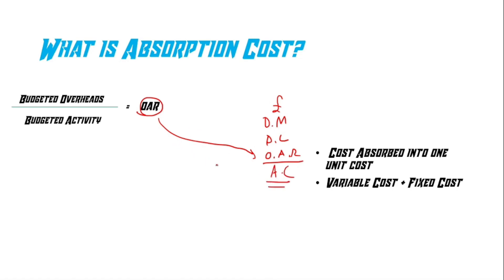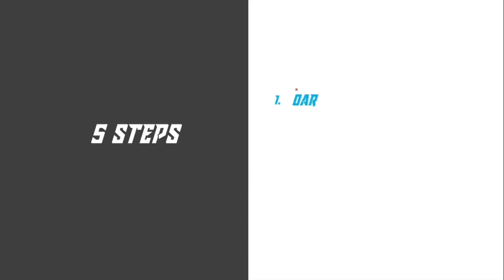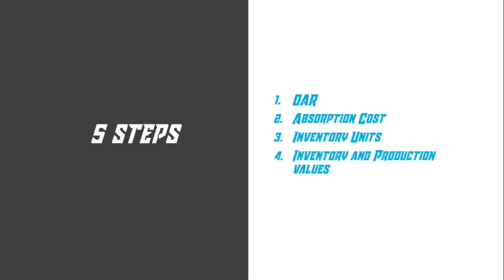Also, with the overhead absorption rate you'll be able to calculate whether the cost is under or overabsorbed, which I'll explain in this video. So what are the five steps? Step one is to calculate the overhead absorption rate, step two is to calculate the absorption cost, step three is to calculate the inventory units, step four is to calculate the inventory and production values, and step five is to calculate under or over absorption.